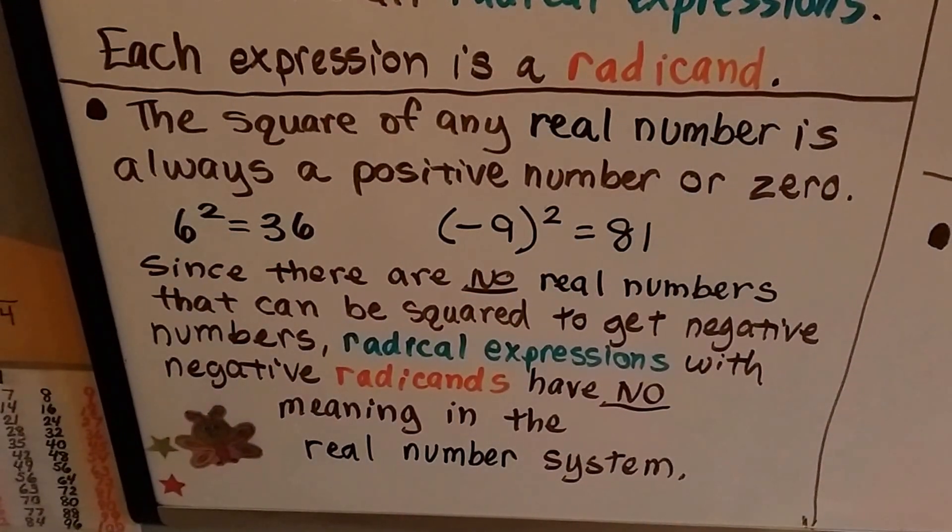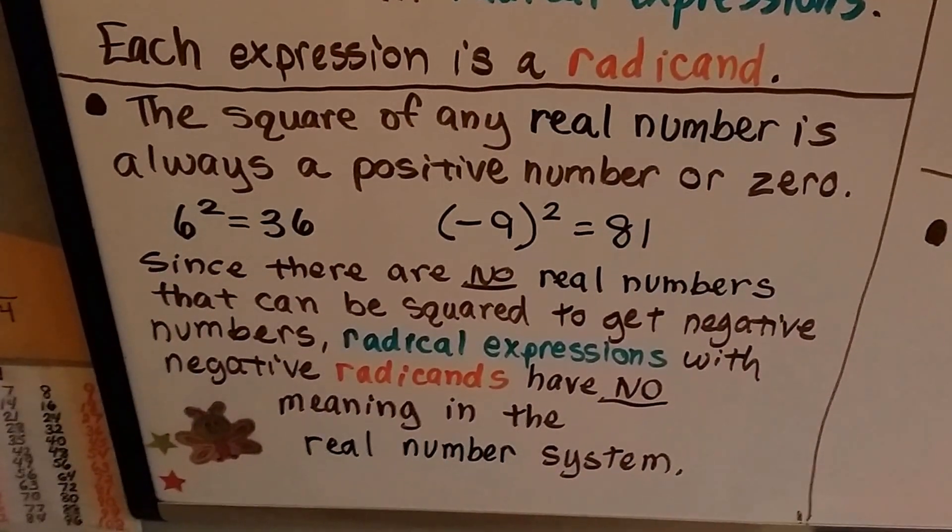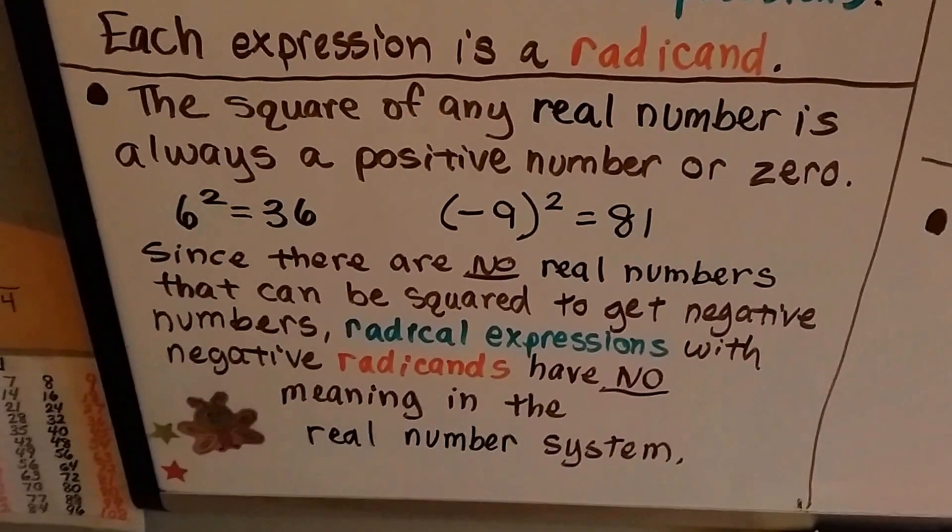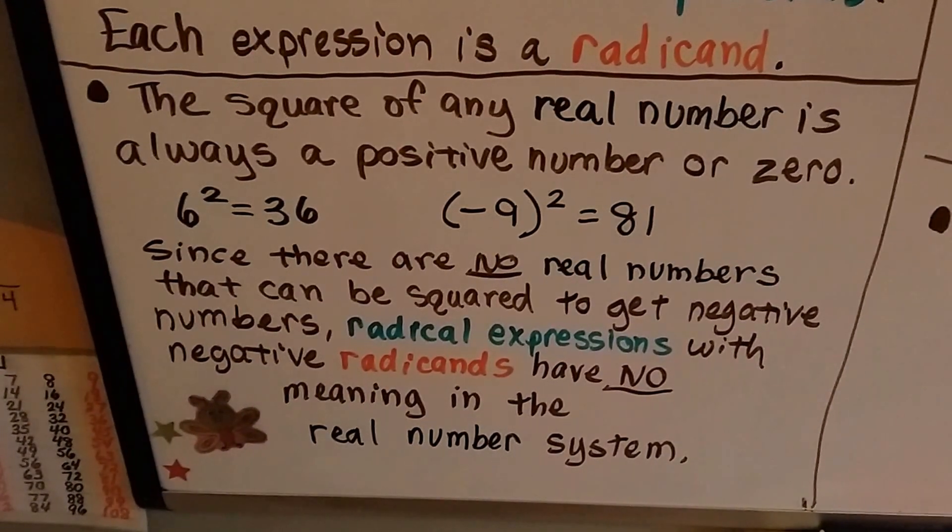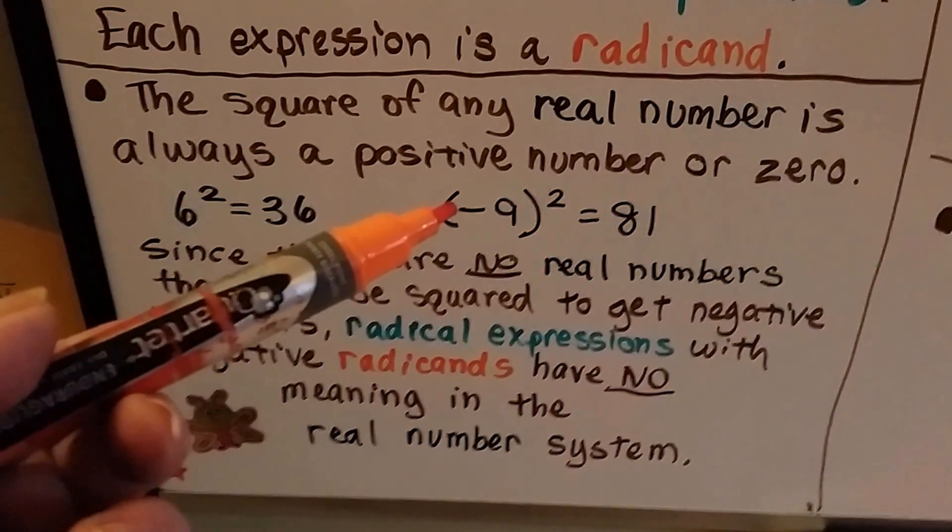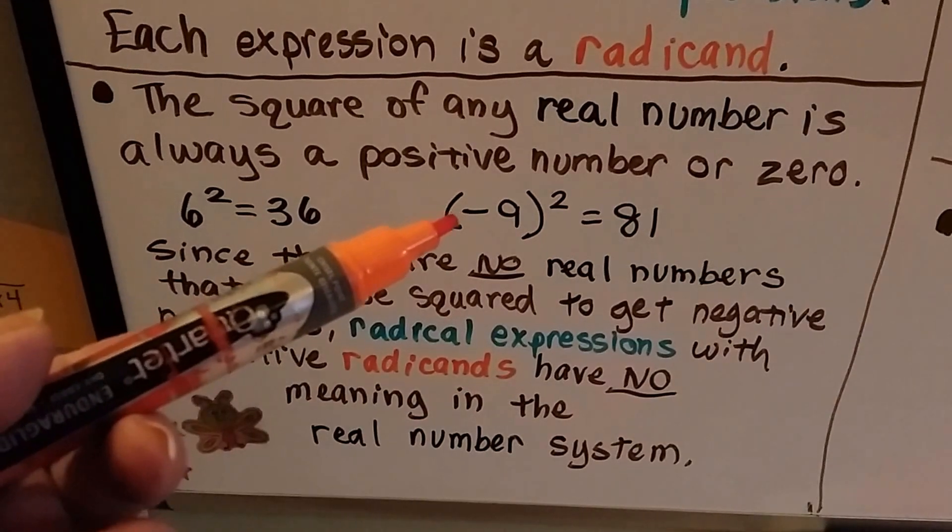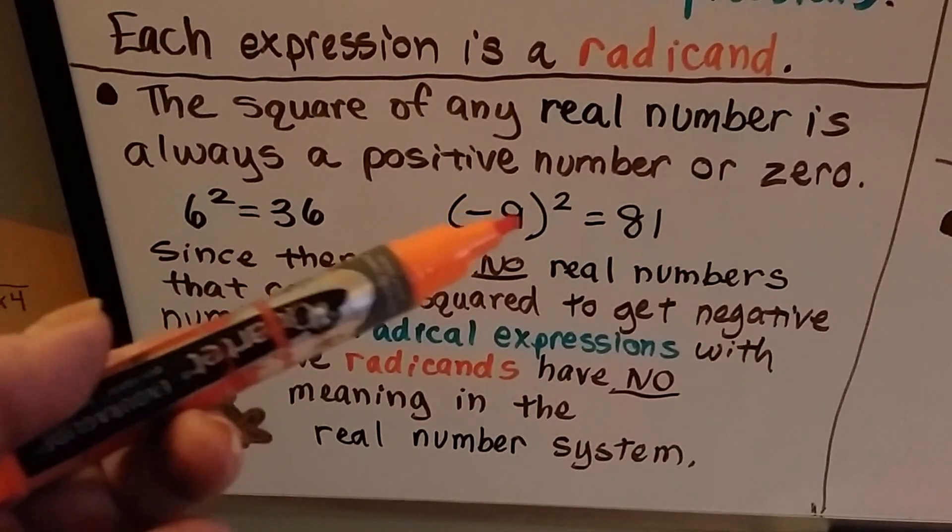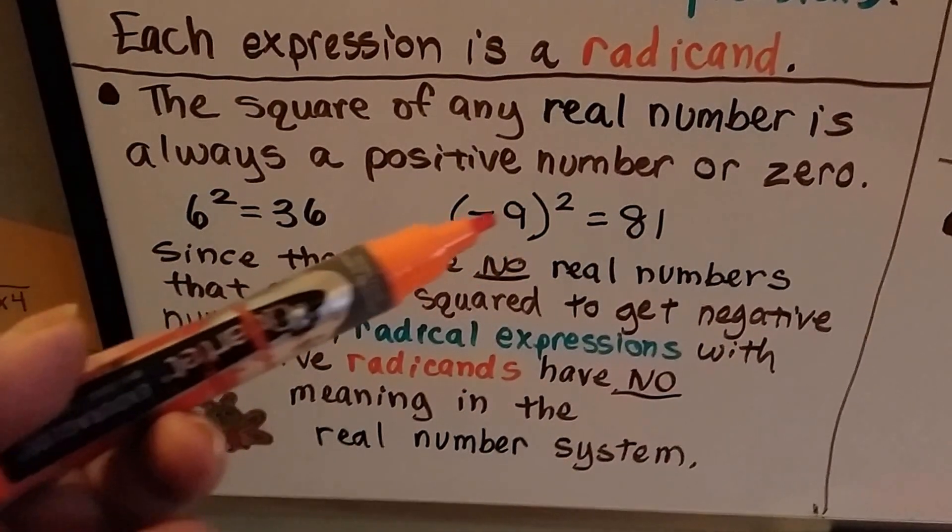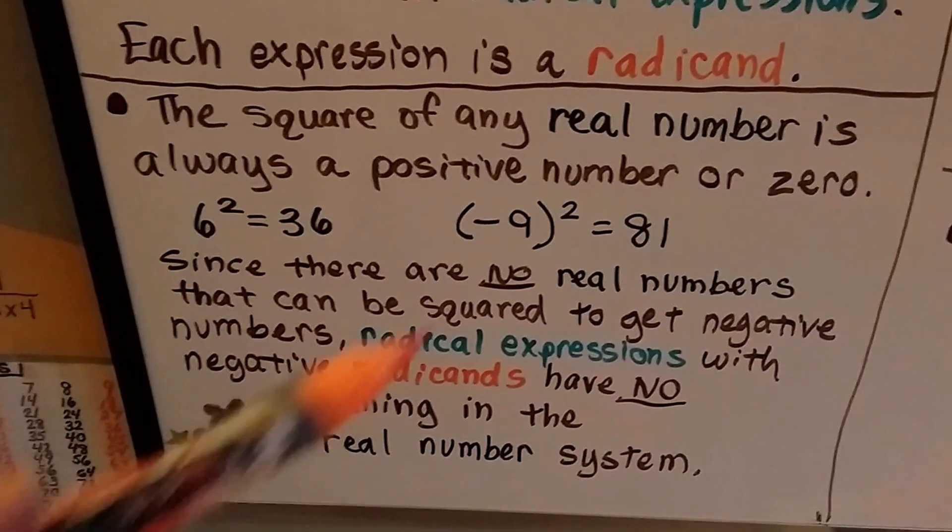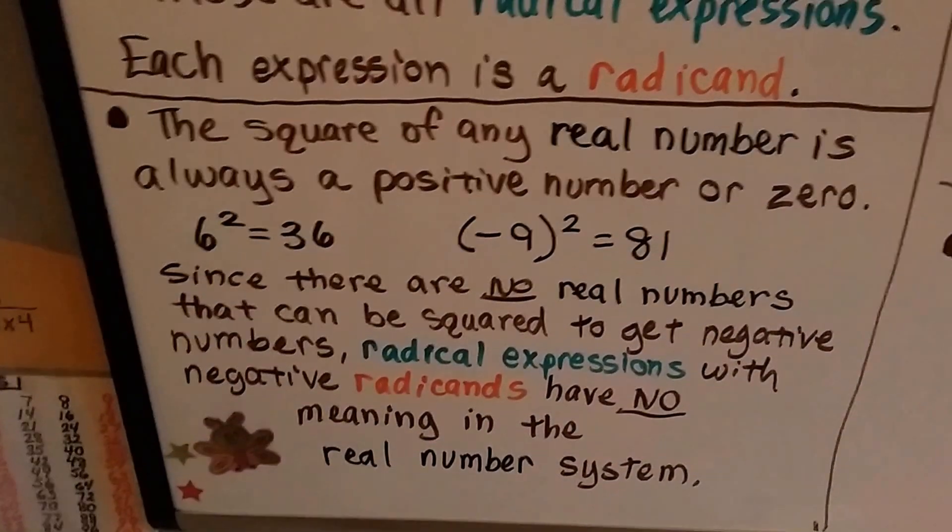Since there's no real numbers that can be squared to get a negative number, radical expressions with negative radicands have no meaning in the real number system. We'd have to multiply a negative to a positive to get a negative, wouldn't we? And we can't do that when we're squaring. Because when we're squaring, we're squaring the exact same number. So two negatives are going to make a positive, no matter what we do.